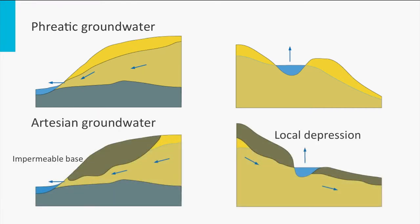Artesian water is confined by an impermeable layer, resulting in the build-up of hydraulic pressure. This groundwater is also characterized by long residence times in the aquifer, resulting in changes in water quality — for example, improvement of microbial reliability, but also deterioration of quality by the dissolution of inorganic constituents.